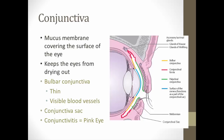The conjunctiva is a mucus membrane that covers the surface of the eye. It is very thin and keeps the eye from drying out. The bulbar conjunctiva is the yellow region that covers the white of your eye, or sclera. It has blood vessels visible within it — these are the blood vessels we constrict by putting Visine in our eyes, as discussed when covering autonomic nervous system physiology.